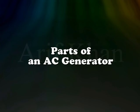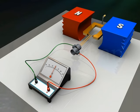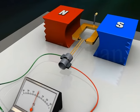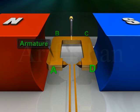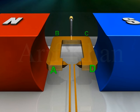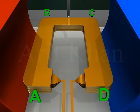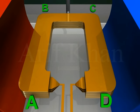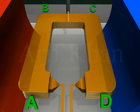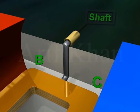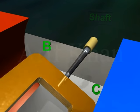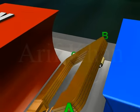An AC generator has an armature ABCD. It is a rectangular coil with many turns wound around a soft iron core, and a shaft which can be rotated rapidly.